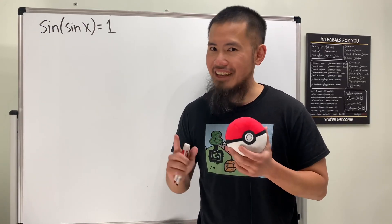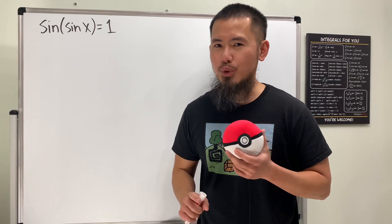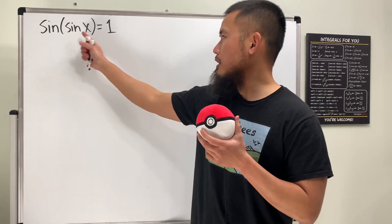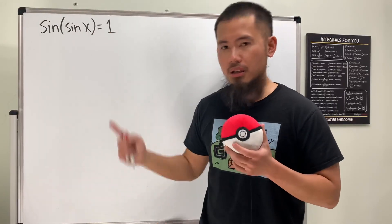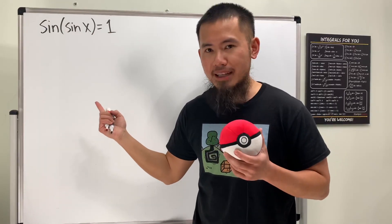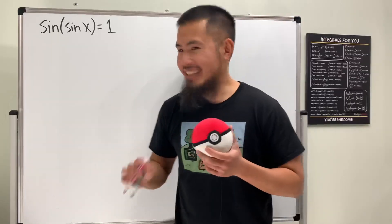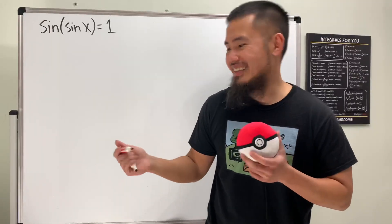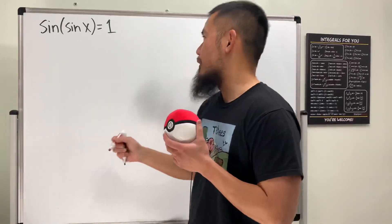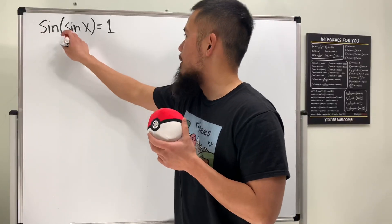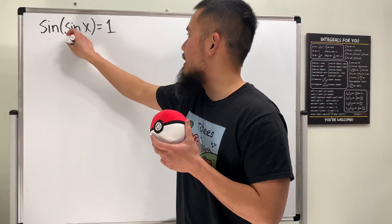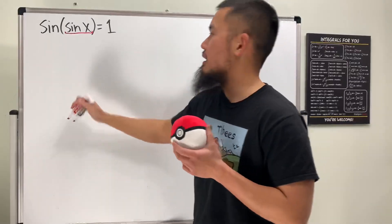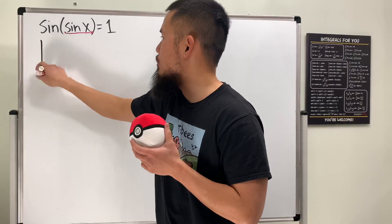Let's do some math for fun. I have a very interesting question: we are going to solve sine of sine of x equals one. It doesn't look so bad, but it is — not only is it bad, but it's also complex, as you'll see. First of all, we have to look at what value makes sine equal to one, so refer to the unit circle real quick.